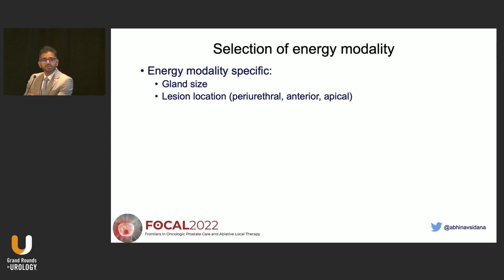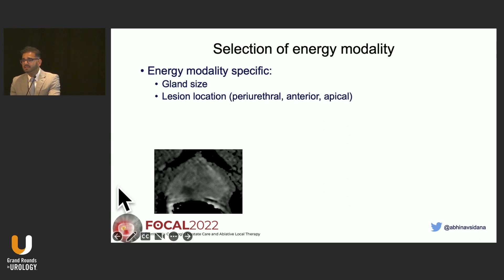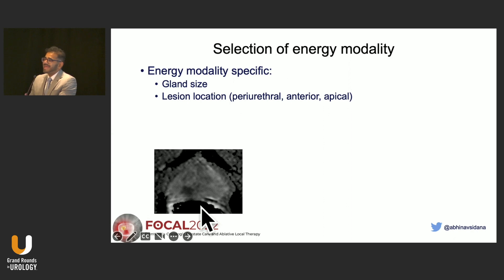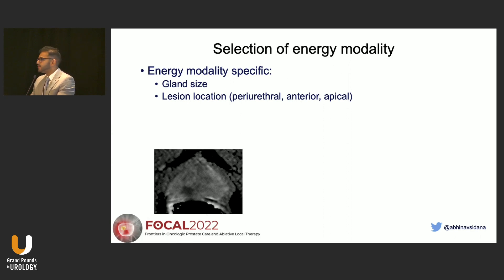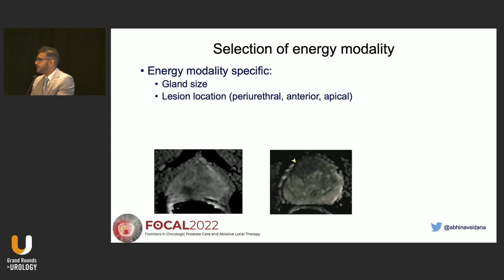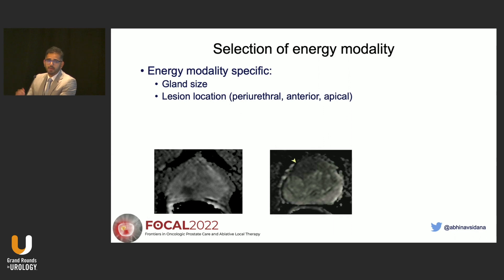Lesion location is also important. For a posterolateral lesion, you can achieve focal therapy with almost any energy modality — HIFU, cryo, IRE, or transurethral HIFU. But an anterior large lesion may not be a great candidate for HIFU because it would not achieve optimal ablation. It depends what access to energy modalities you have; some patients may be focal candidates in one practice but not in another.